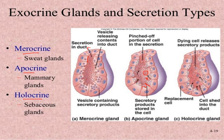The last type is holocrine. Here the entire cell disintegrates from its place to release the secretion. Along with the secretions, the dead cell itself is also released. An example of this is the sebaceous gland. Along with the secretion, dead cells also come out. These are the different types of exocrine glands present in our body.